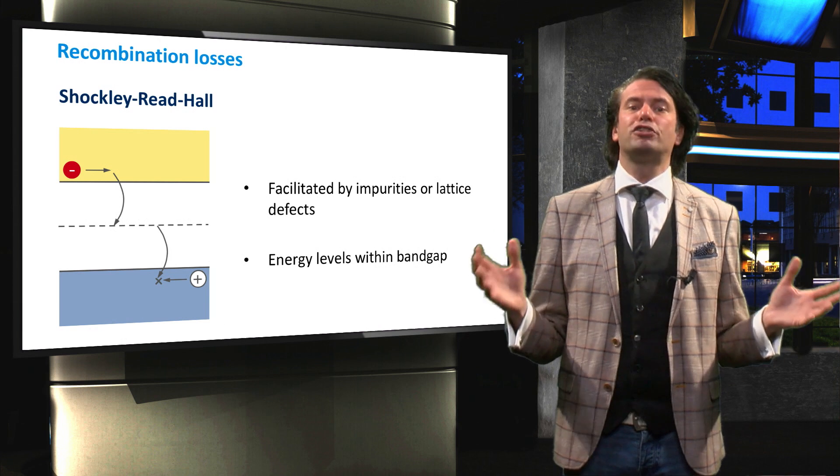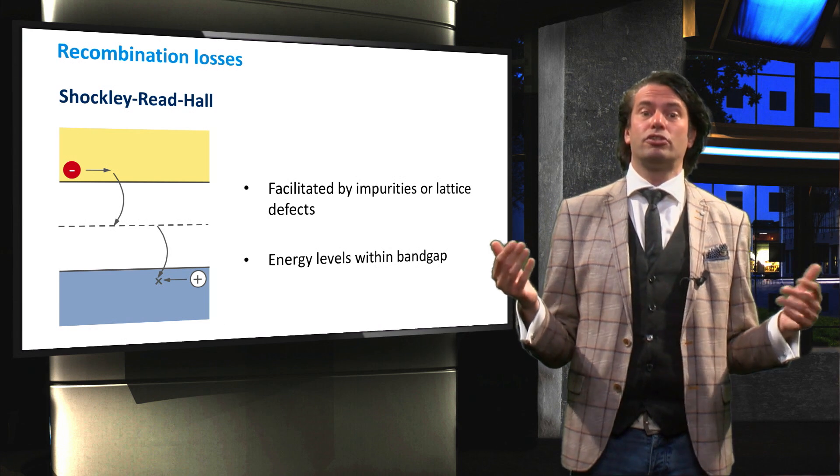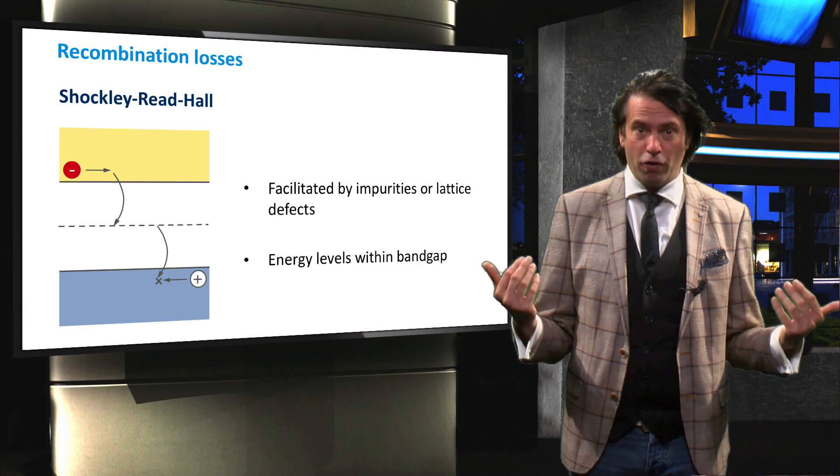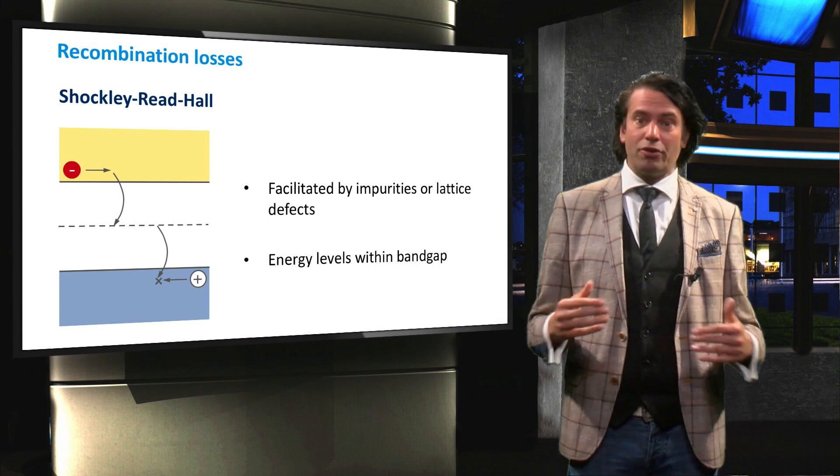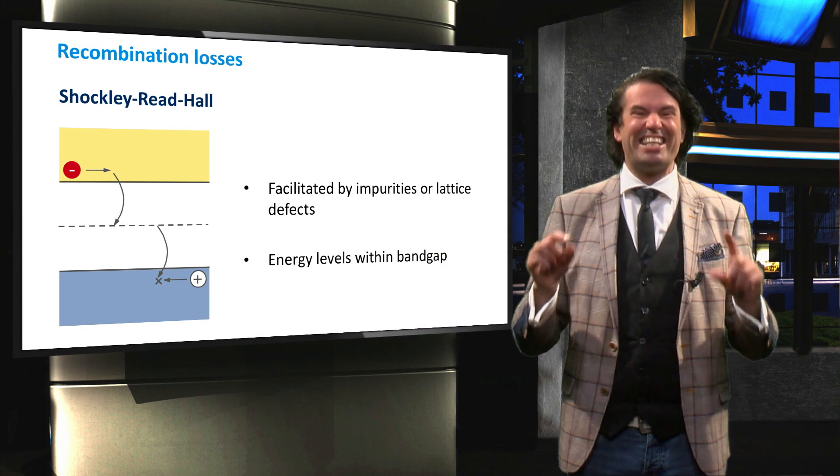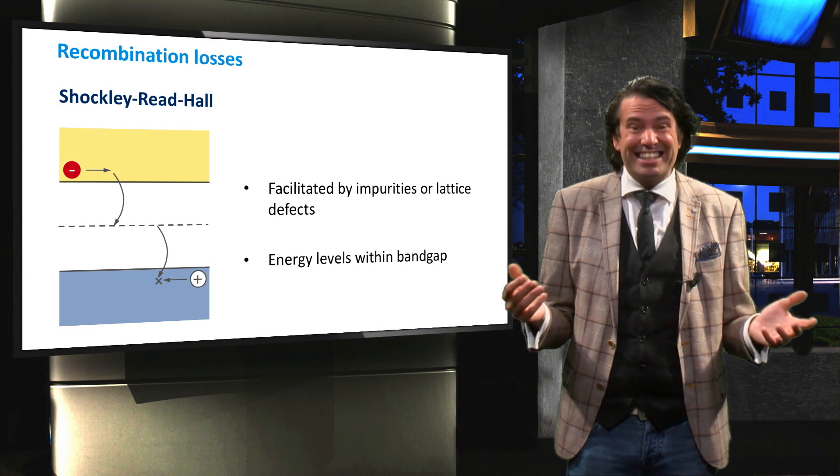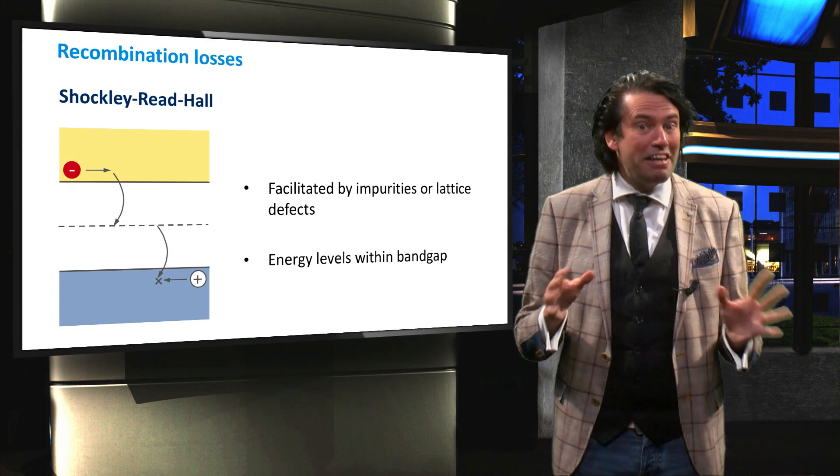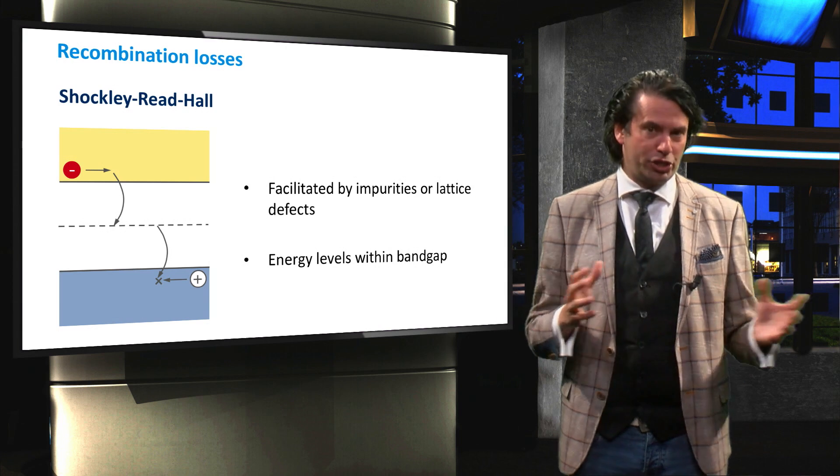At the surface of a semiconductor the crystalline lattice terminates. Therefore, many valence electrons cannot find a partner for creating a covalent bond. This results in so-called dangling bonds, which in essence are localized defects that may trap a charge carrier.